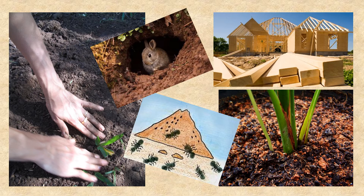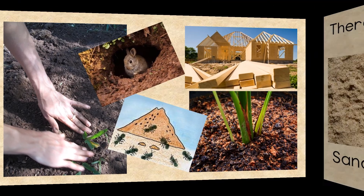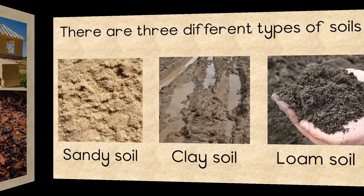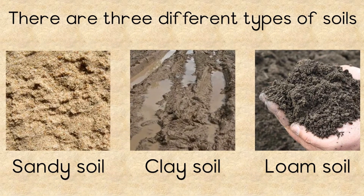People need soil to live. Insects like ants as well as worms live in the ground, and most plants need soil to grow in. We are going to have a look at three different types of soils.